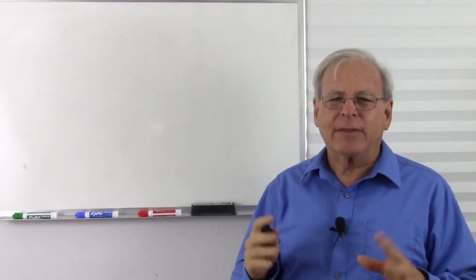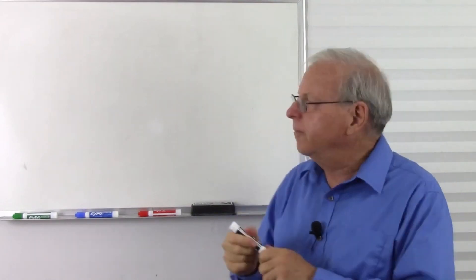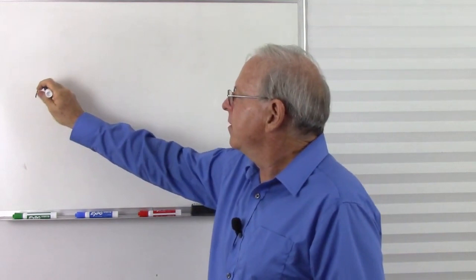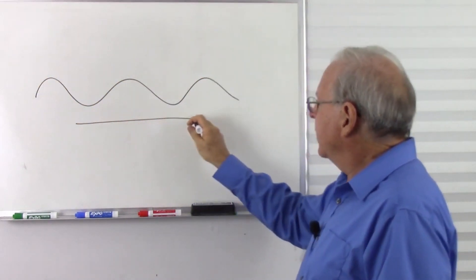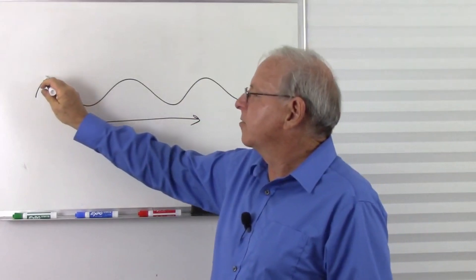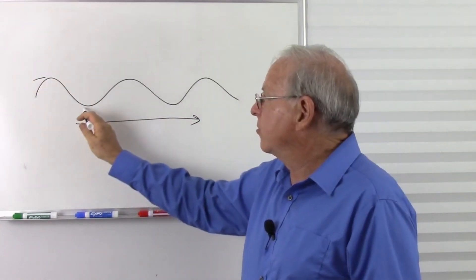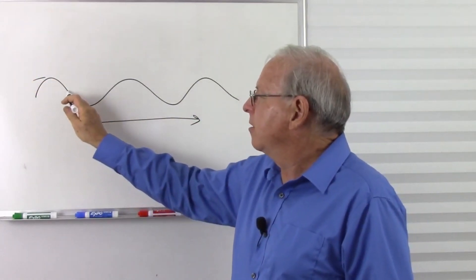And waves kind of do the same thing. Think about a surface wave in the ocean. So we have a wave in the ocean, and this wave is moving, and sometimes it's at a high point, at a peak, and sometimes it's at a trough, and sometimes it's in the middle.